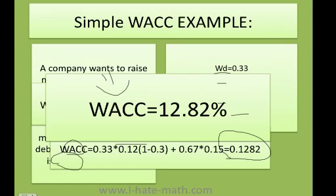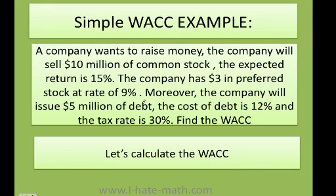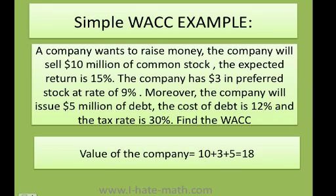Let's do another problem. It's the same example, but now the company is also going to have $3 million in preferred stock at a rate of 9%. Let's find the WACC. Now I have three components: preferred stock, common equity, and debt. The total value of the company is $10 million of common stock plus $3 million of preferred stock plus $5 million of debt, giving a total of $18 million.